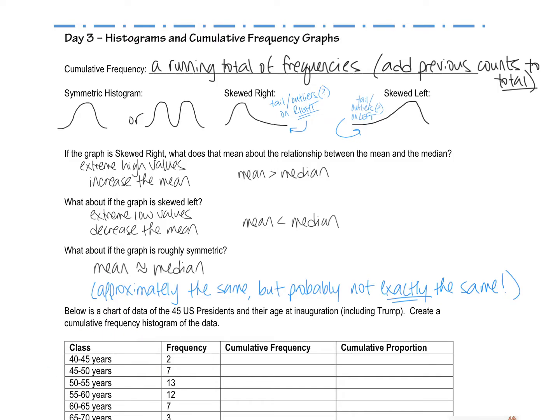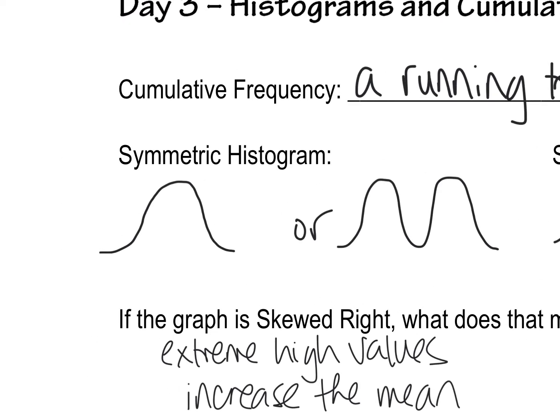I want to review a couple properties of histograms. If we call something symmetric, think about that reflective line. That means you can probably draw a line right down the middle and the left side matches the right side. It could also look something like this, doesn't have to be a bell-shaped graph. It could be a bimodal graph or other options, but think about that line of symmetry.